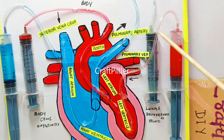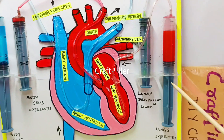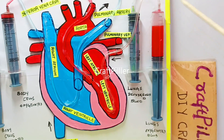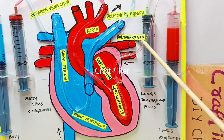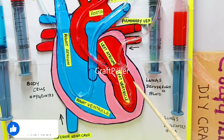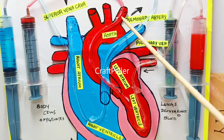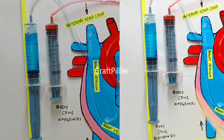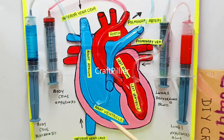Once the deoxygenated blood goes to the lungs, it gets oxygen and is sent back to the heart. For that purpose, we have depicted this syringe — once deoxygenated blood converts into oxygenated blood, it goes to the pulmonary vein, which is where the entry of oxygenated blood happens. Now it goes to the left atrium, then left ventricle, and again it goes to the aorta. From the aorta it goes to the human body cells as oxygenated blood. This cycle keeps happening as long as we live.